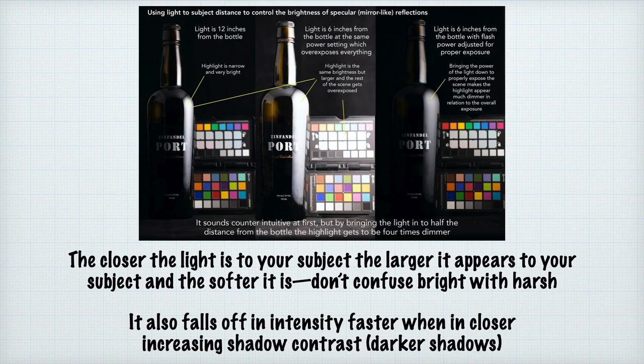Bringing the light in closer does a few things. The light becomes brighter, which we can compensate for by changing the exposure. The light becomes larger as seen by the subject, so the shadow edge transitions have more of a gradient — in other words, the light is softer. The highlight gets larger and dimmer relative to the overall scene exposure. The light falls off more rapidly, increasing contrast by making the shadows darker because less light is bouncing off environmental surfaces.